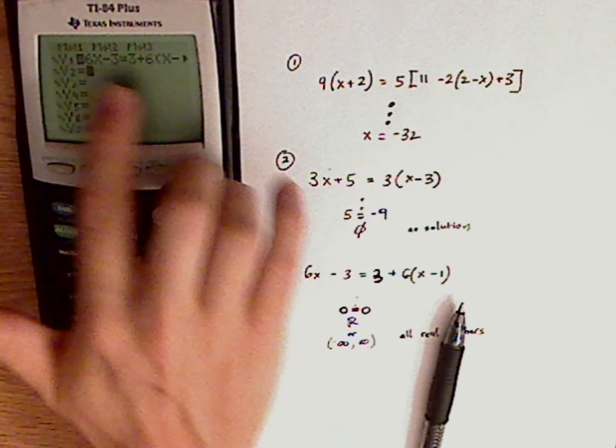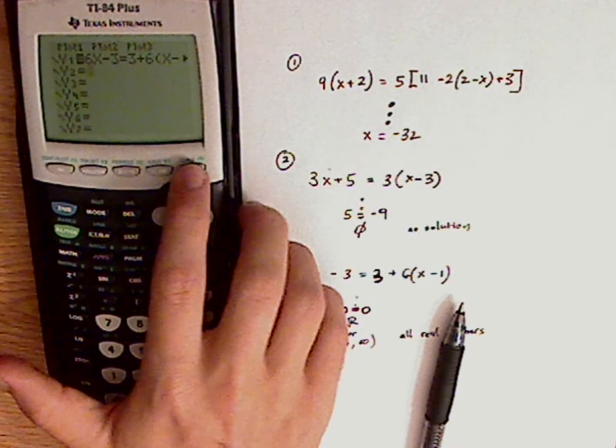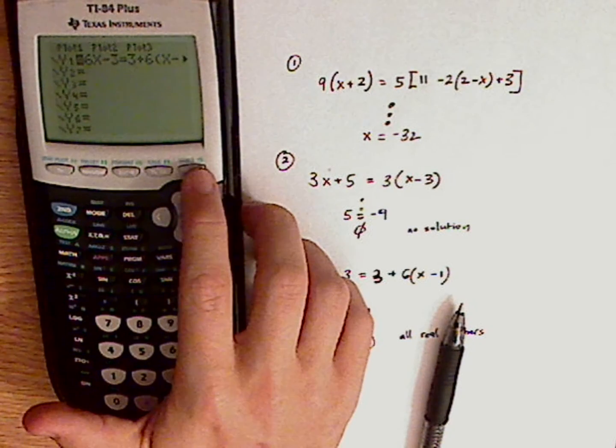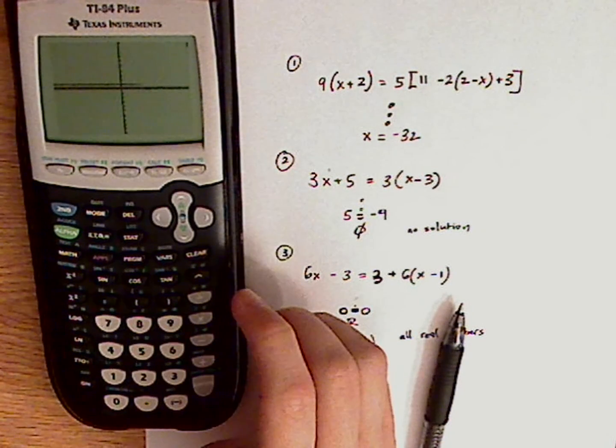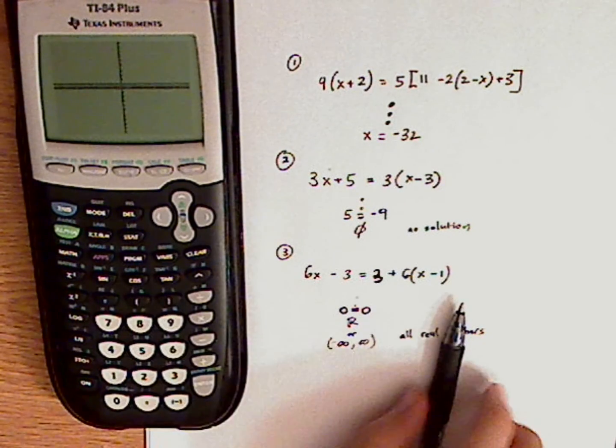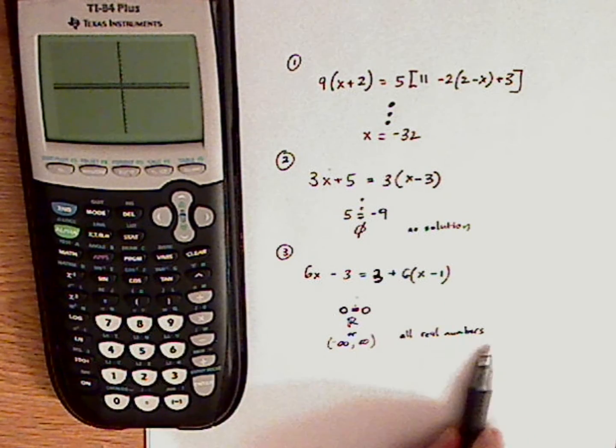Now, this is going to show up as a line. So I'm going to graph it. See that? Shows up as a line. So that tells me that's all real numbers.